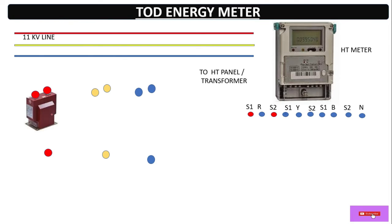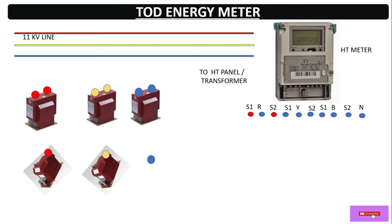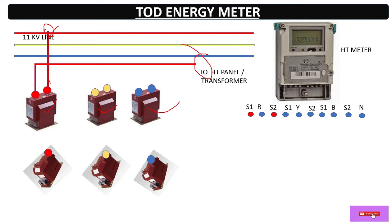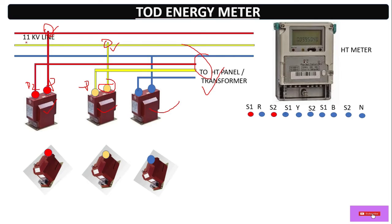To measure the energy consumption of this system, we take three CTs for three lines and three PTs for three lines. For the primary wiring, we tap the wire from the 11 kV line — for R phase, this is P1 and P2. Then from P2 it goes to the HT panel. Similarly, for Y phase we tap from the 11 kV point of supply — P1 in, P2 out, which goes to the HT panel or transformer. Similarly for B phase. This completes the primary connection wiring.